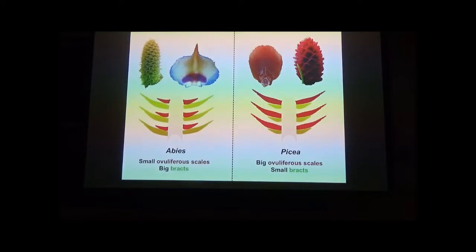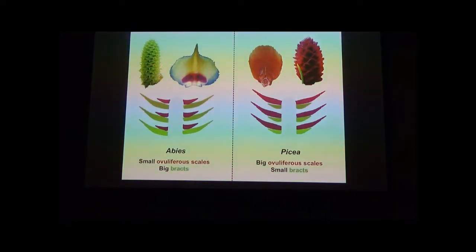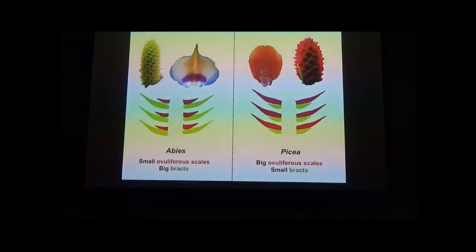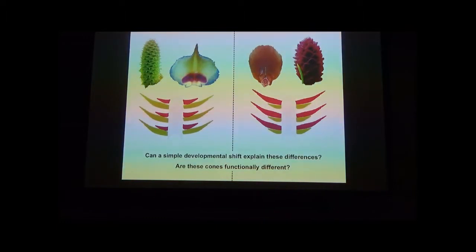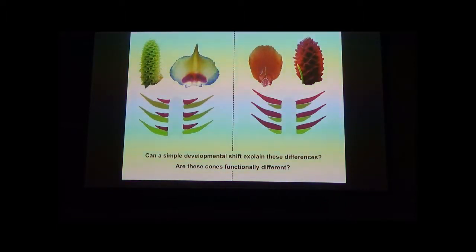I noticed that a spruce cone and a fir cone at pollination have a vaguely similar look—scales with openings so pollen can get inside. But the actual units are quite different. In spruce (Picea), the ovuliferous scale is the bigger structure dominating the aerodynamic scaffolding. In fir (Abies), it's the bract that's larger, and the ovuliferous scale is small. We wanted to know: can this difference be explained by a simple developmental shift? And are they functionally different—is one actually better at capturing pollen from the wind?